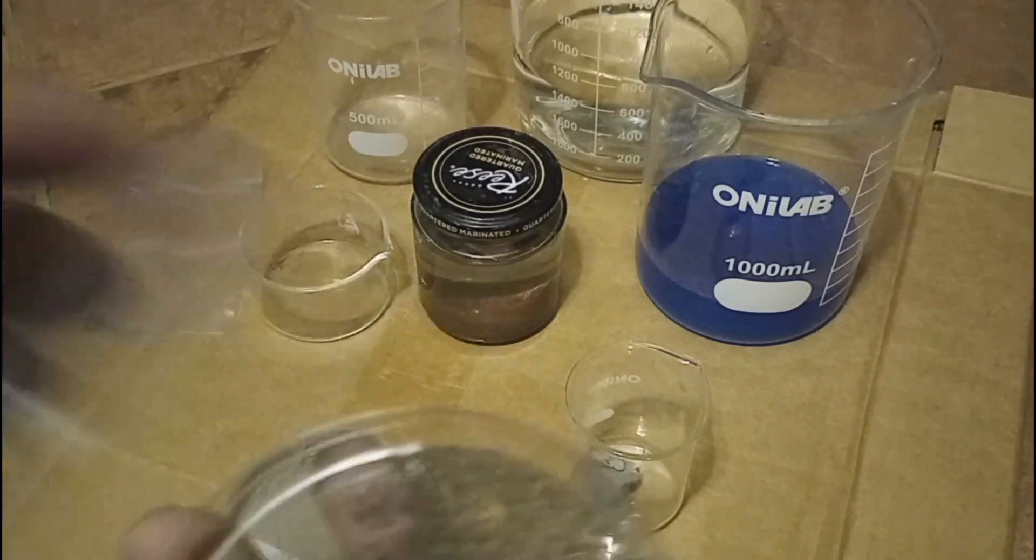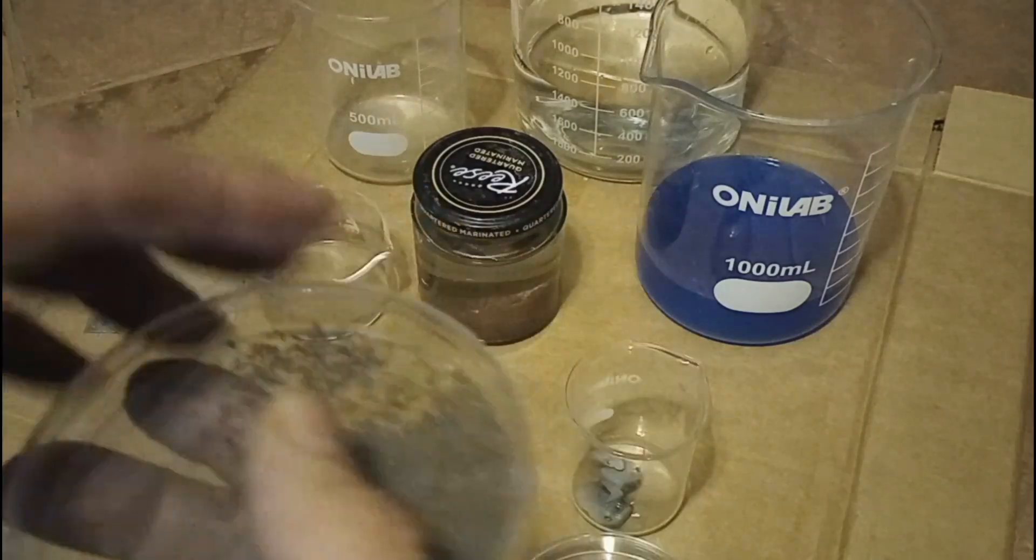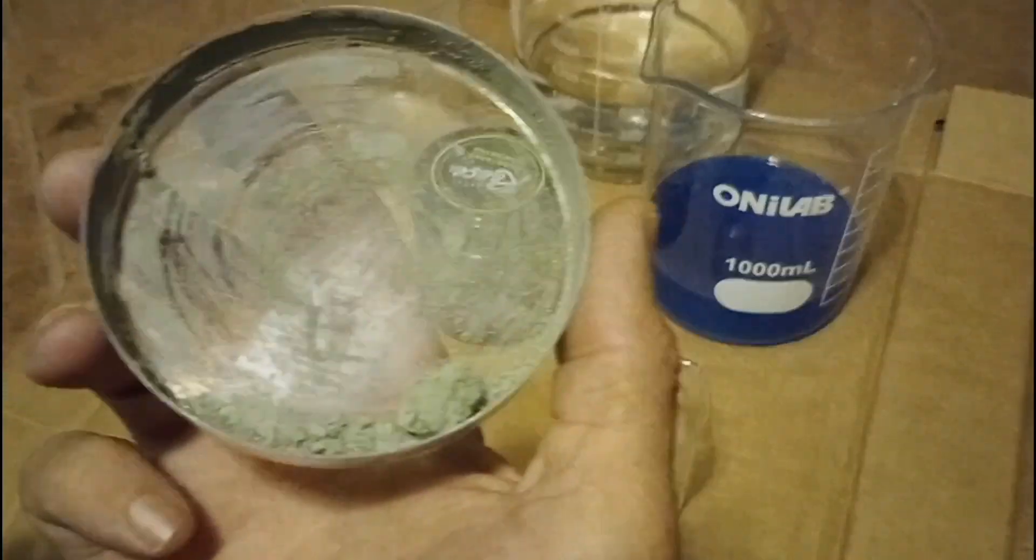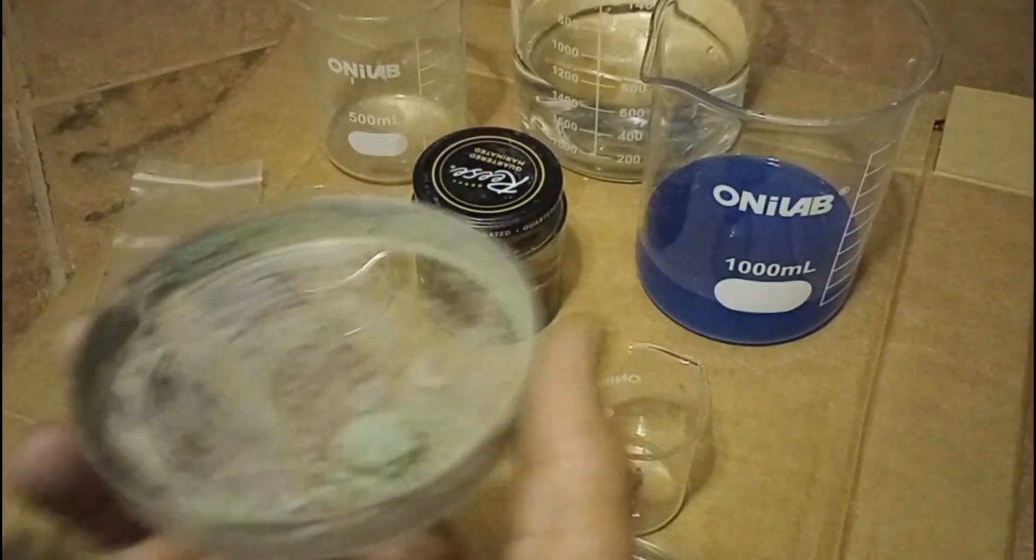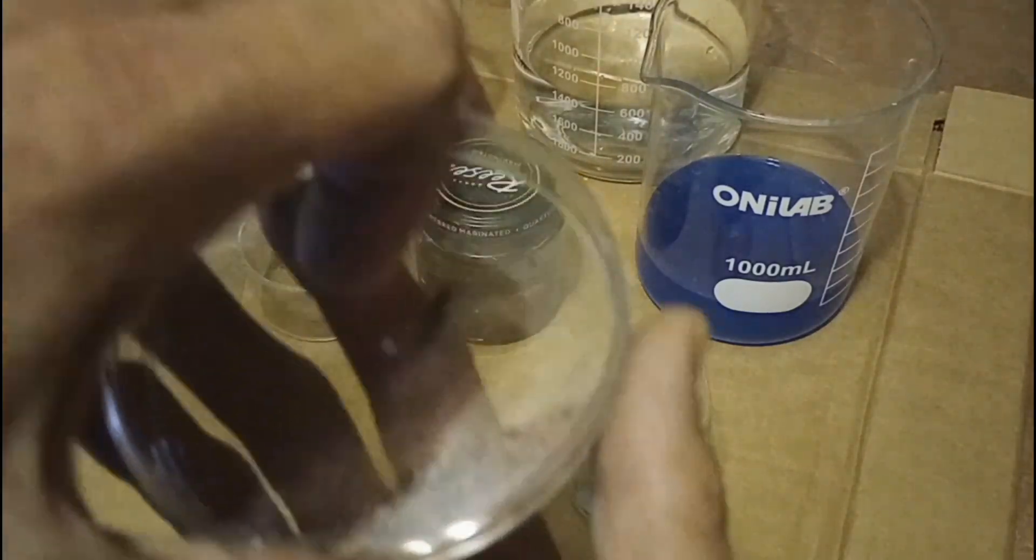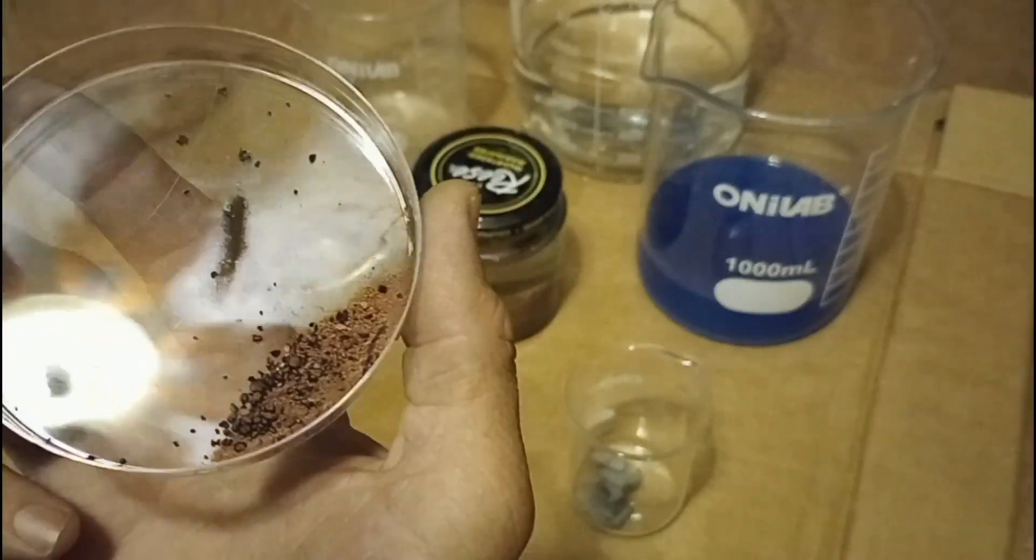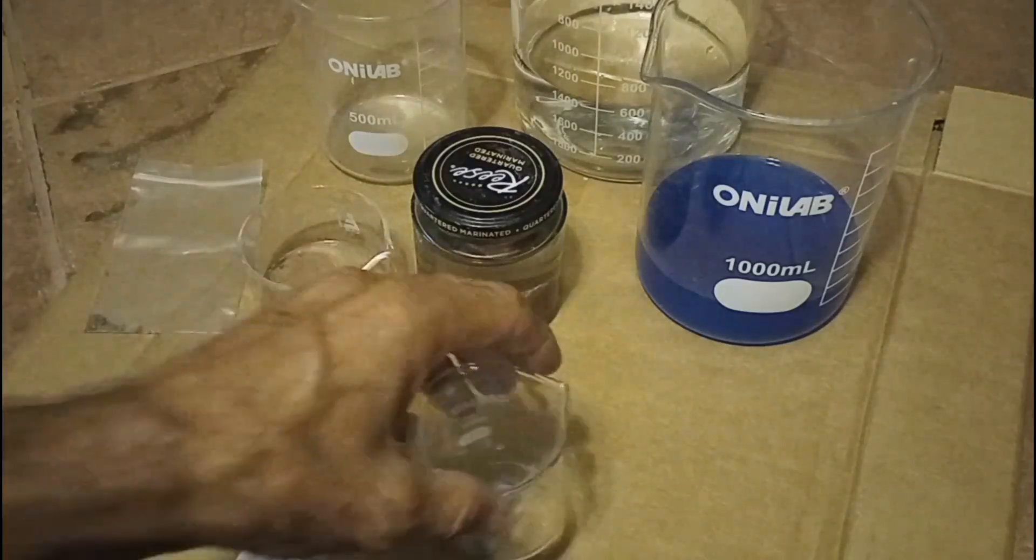So this is everything we accumulated from the first 4 episodes. This is the undissolved particles of brass. This is all of the sediment which may contain silver. This is the copper substance with the black flakes in it from the last video. These are the zinc strips that were used in the last video.